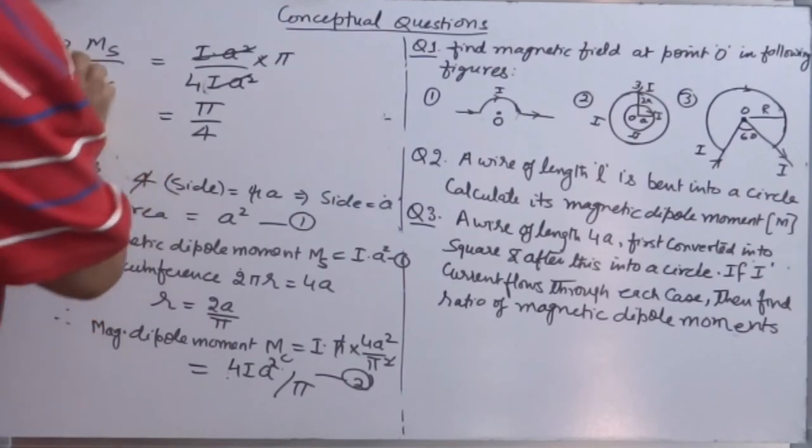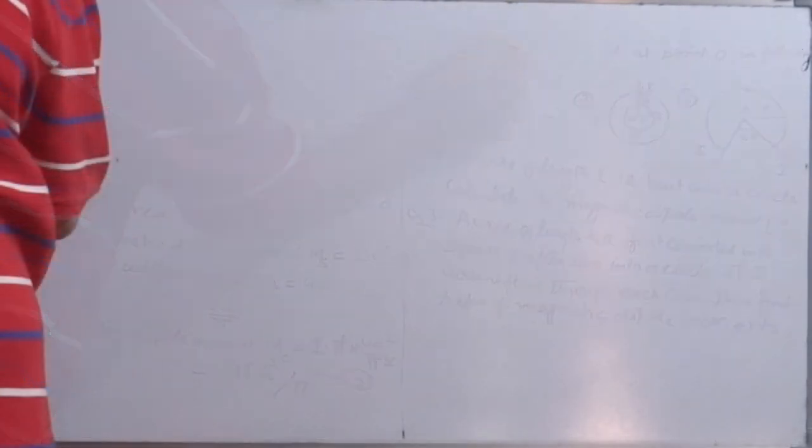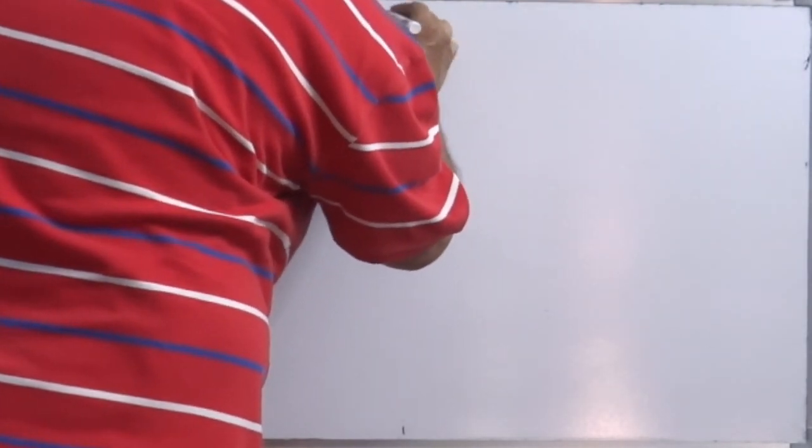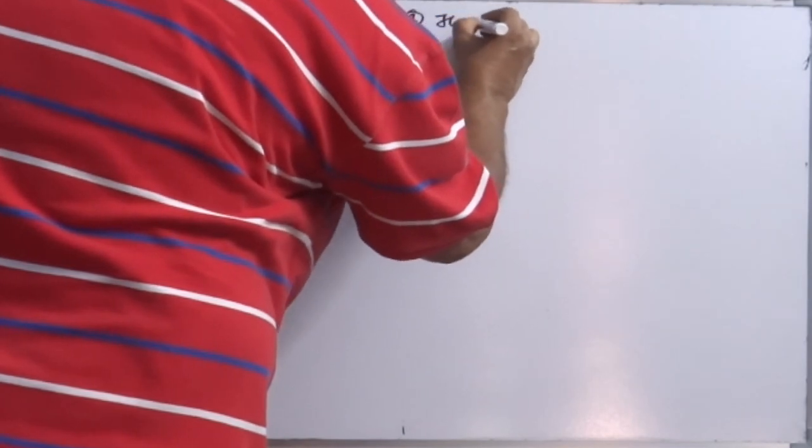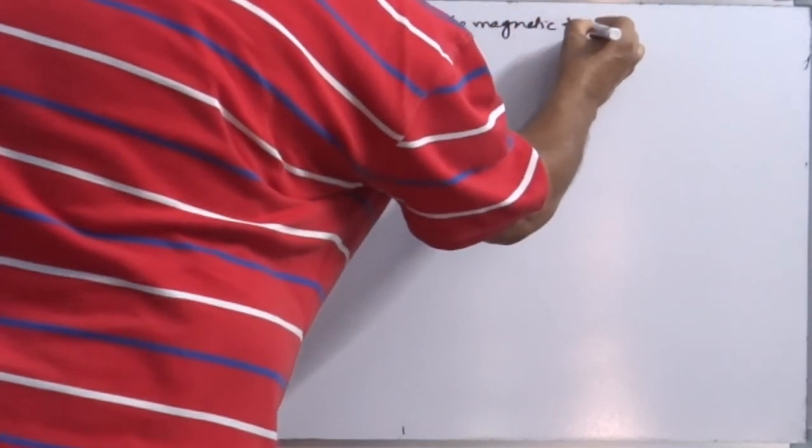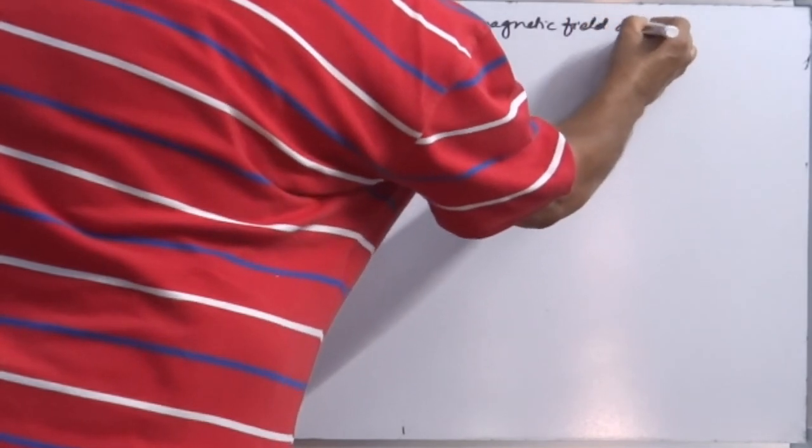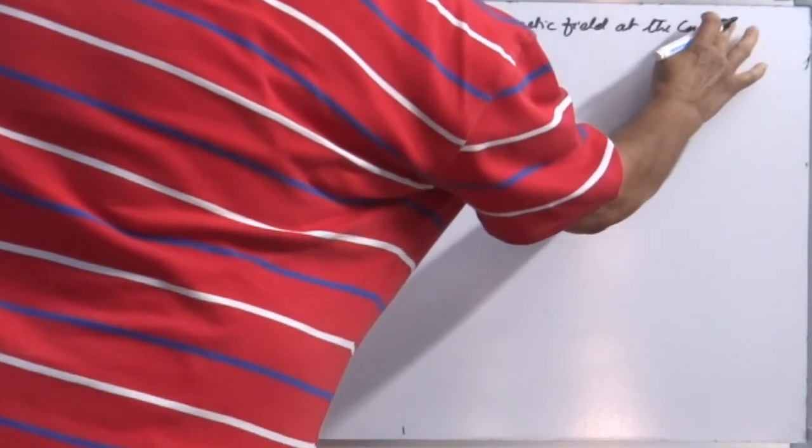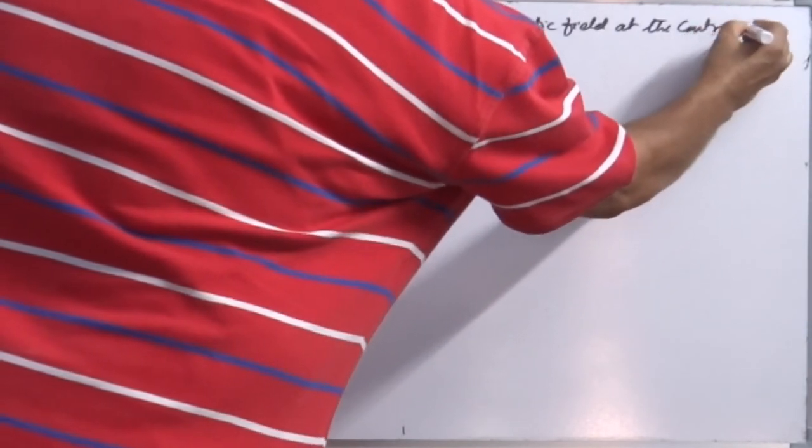Let's see one more question. Question 4: The magnetic field at the center of a coil having n number of turns and radius R carrying current I.